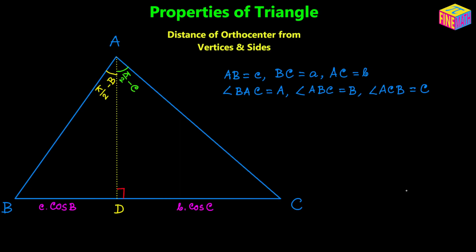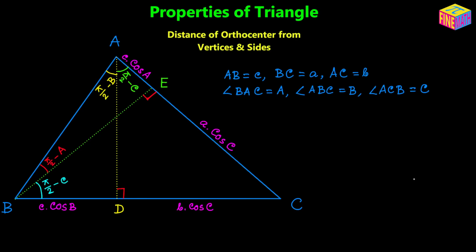Now let's draw the second altitude from vertex B onto the opposite side AC — let's call it BE, so BE is perpendicular to AC. Looking at triangle ABE, which is a right triangle, angle ABE equals 90° − A. Similarly, angle EBC equals 90° − C, because triangle EBC is also a right triangle and angle ECB is uppercase C.